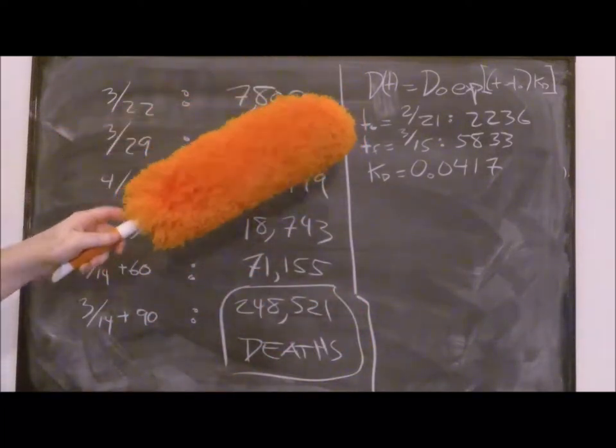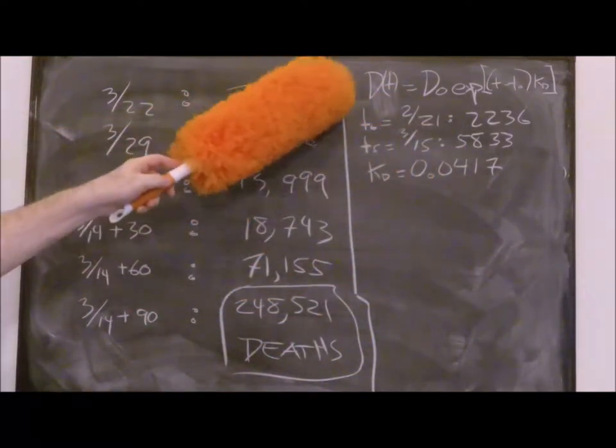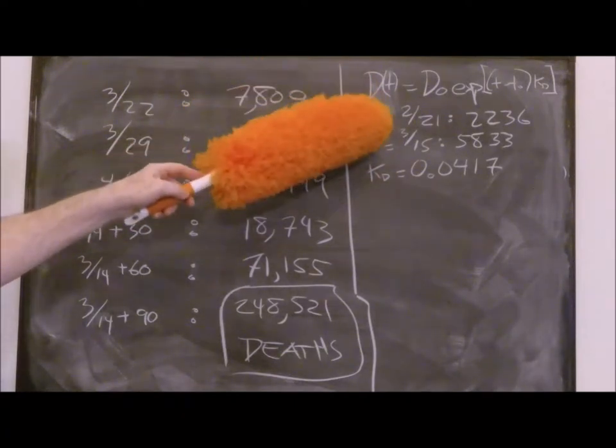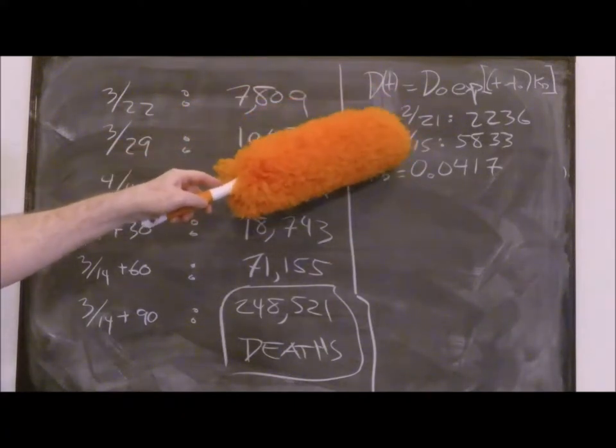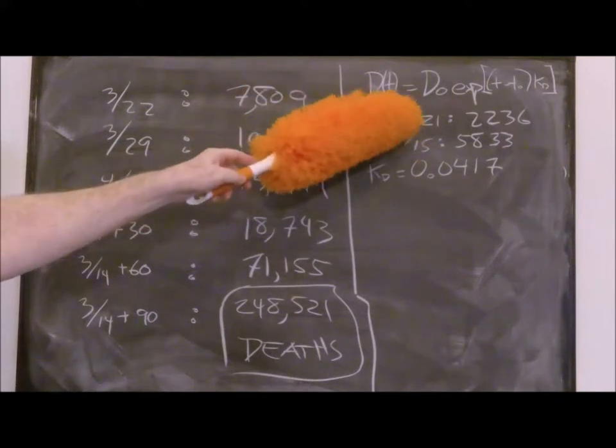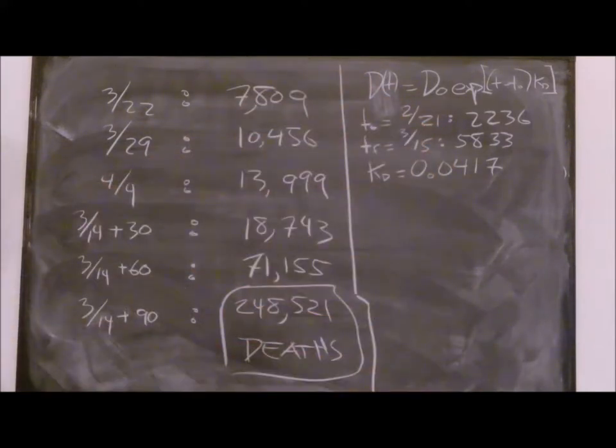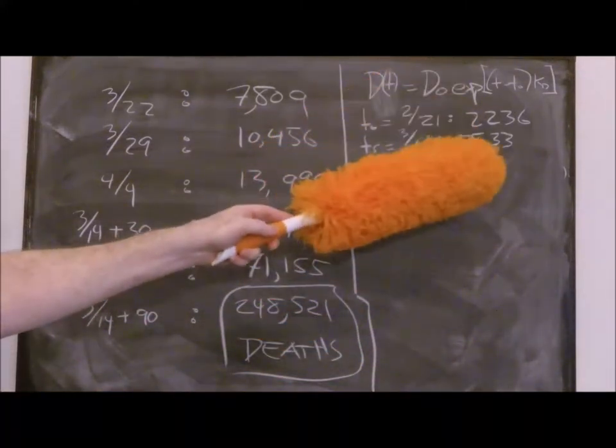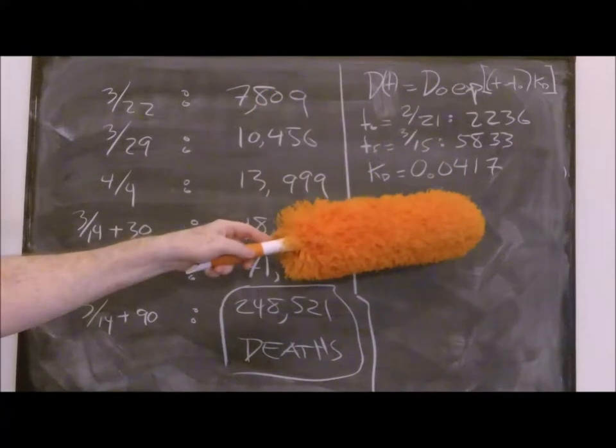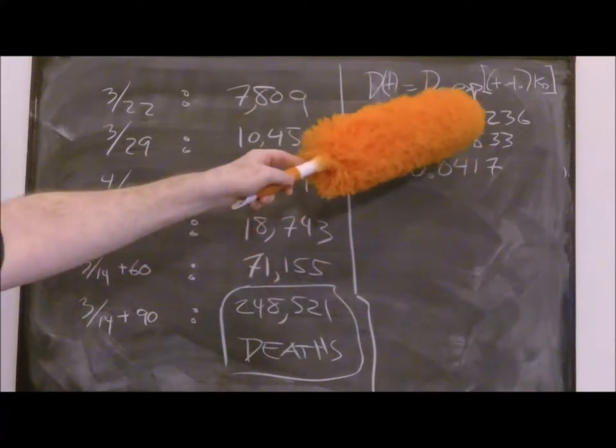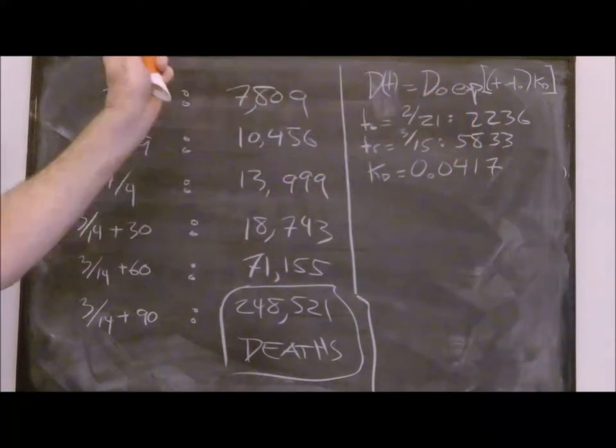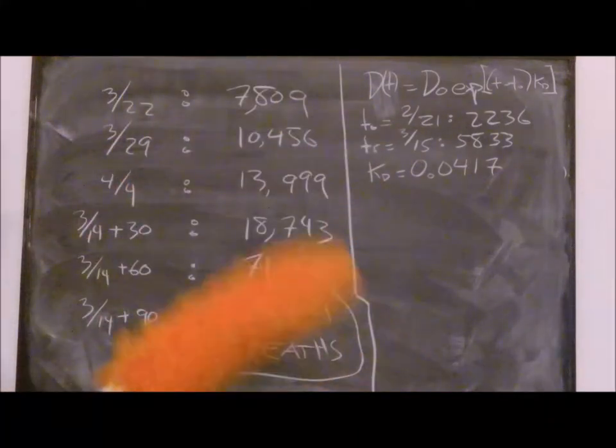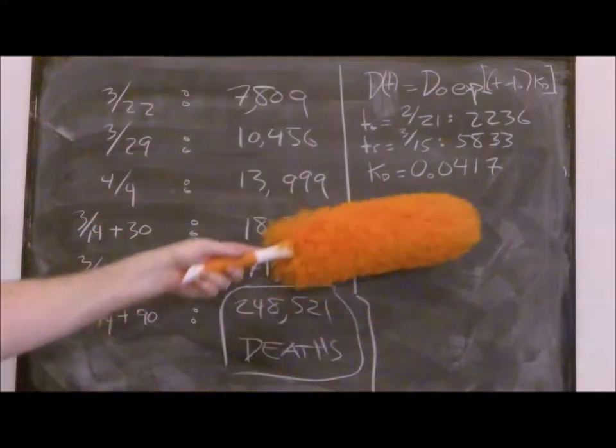Today, earlier today, I looked at the web and it was 5,833 on the Johns Hopkins website. I have my differential equation up here. It's the same one I used before except now I'm trying to find out how many people are going to die, so I use D for death. D subscript zero is 2,236, T subscript zero is February 21st, and we have to solve for K subscript D, the constant that makes all this happen.